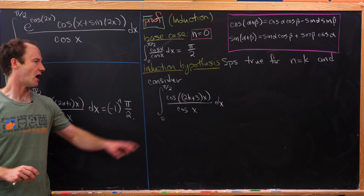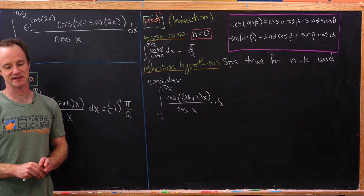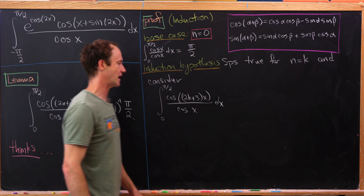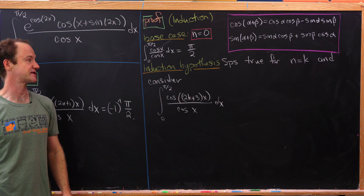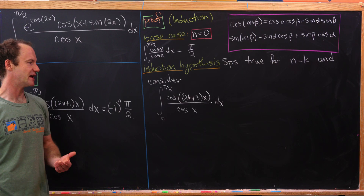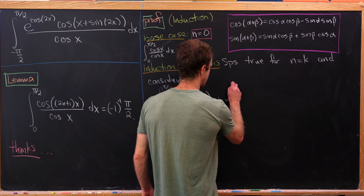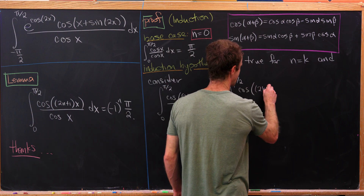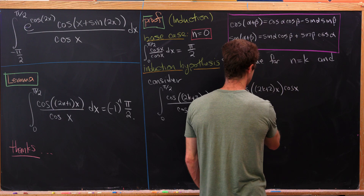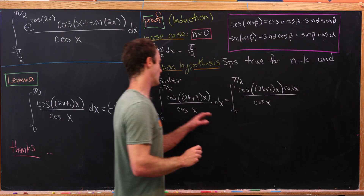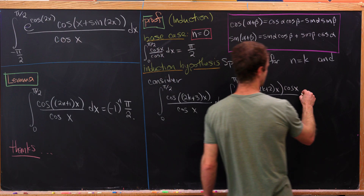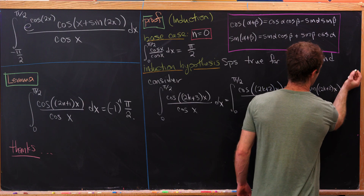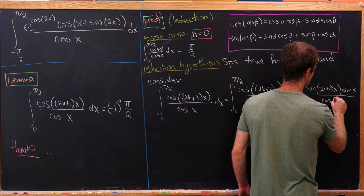Since we're dealing with odd numbers times x, we need to go to the next odd number. Using the cosine sum-angle formula with alpha equal to (2k+2)x and beta equal to x, we get the integral from 0 to pi over 2 of cosine of (2k+2)x times cosine of x over cosine x, plus sine of (2k+2)x times sine of x, all over cosine of x.